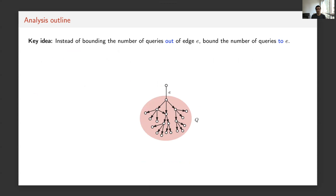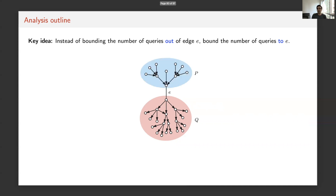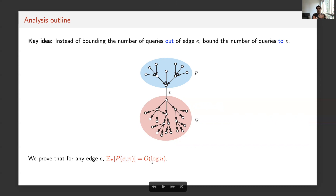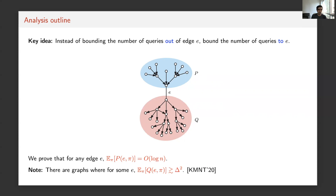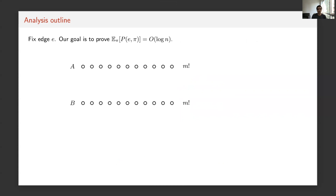Let me outline how we prove the upper bound of D-bar × log N. The key idea, following the approach of Yoshida et al., is: instead of directly bounding the number of queries out of an edge e, we bound the number of queries made to edge e. That is, if we start the query process from every vertex in the graph and count how many times edge e ends up being queried in total — call this p(e, π) — we analyze that quantity instead. Then q and p are complementary perspectives.